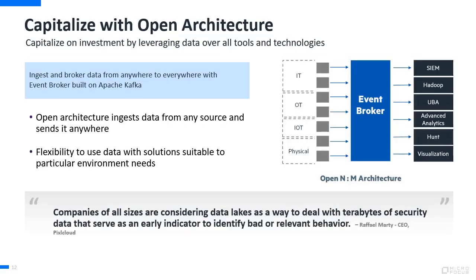The Event Broker component enables this open architecture. All the data that gets collected is centralized at the Event Broker, and Apache Kafka enables it to then provide that data to all the different consumers. So collect from anywhere, bring it to Event Broker, and then have whatever needs to consume it — your SIEM, Hadoop, user behavior analytics, hunt teams, advanced analytic teams — they can all pull the selective data that they need. Send to one place, and all consumers can connect to that one place.